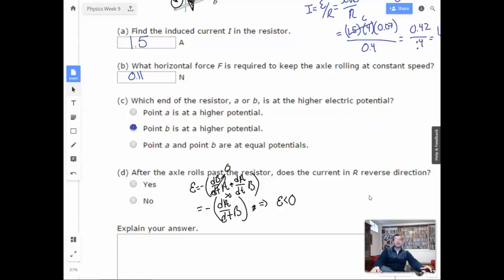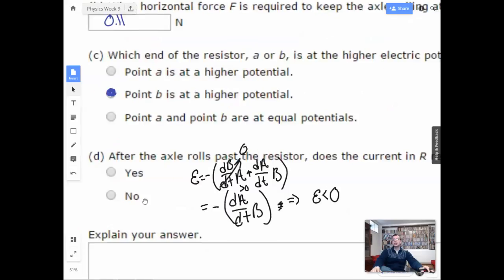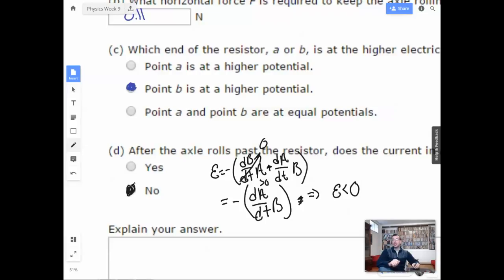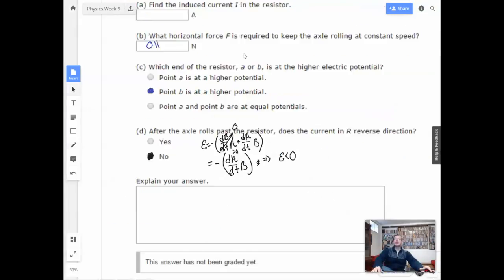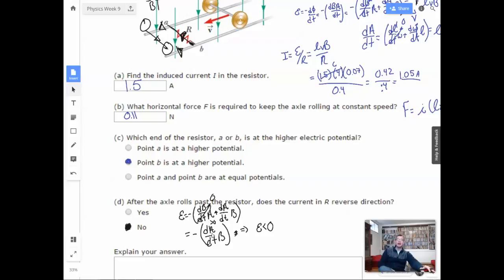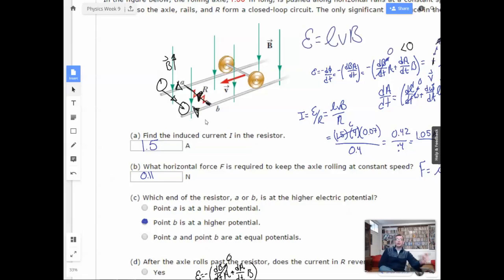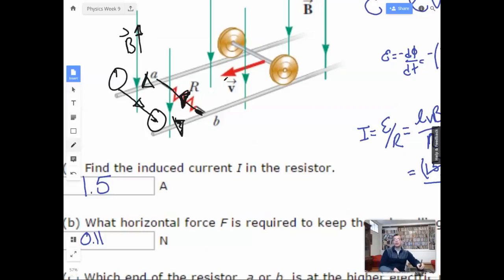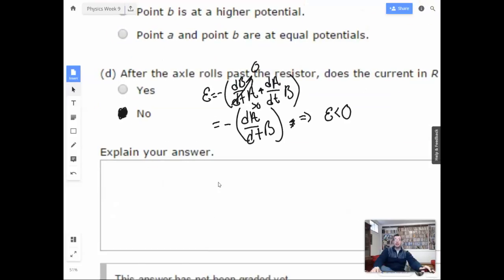So after it passes, the magnetic field is still going to go in the same direction as R, or as it was previously. So it's still going to go from B to A. So, after the axle rolls past the resistor, does the current in R reverse direction? No. It passes through R the same way. And the reason is because you have basically a double negative. So you're going to have the current going from clockwise to a counterclockwise direction. And so that's going to change the direction. But you're also going to have the area going from getting smaller to getting bigger. And you're basically going to have a double negative between the two. And that's going to give you the same result as you started with.